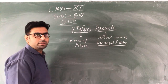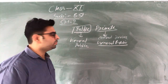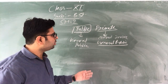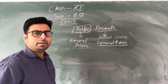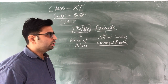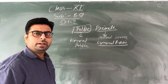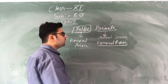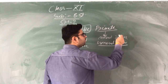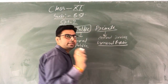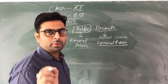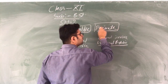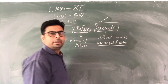In a private company, only members will contribute capital, and in a public company, the public will contribute capital. Since a private company does not need to take capital from the public, there is no requirement to complete this third stage. That means after receiving the certificate of incorporation, a private company can directly start business.